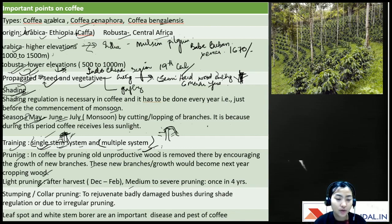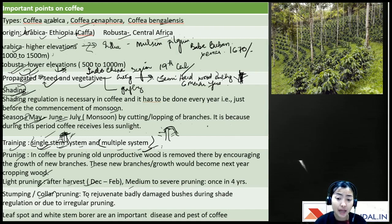Severe pruning is done once in four years. Stumping or collar pruning is done to rejuvenate badly damaged bushes due to irregular pruning or shade regulation issues.